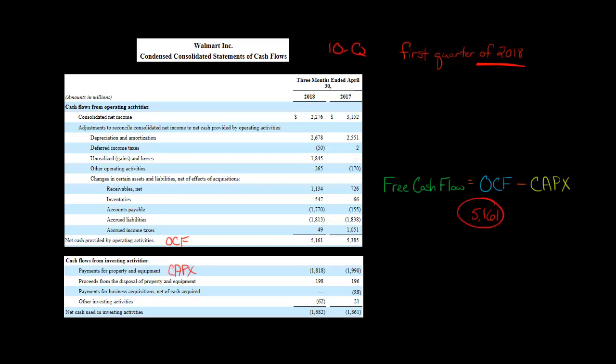So we've got 5,161. Then we're going to subtract the capital expenditures. And that amount is a little over $1.8 billion. So we're going to take 1,818. Remember, those are in millions.